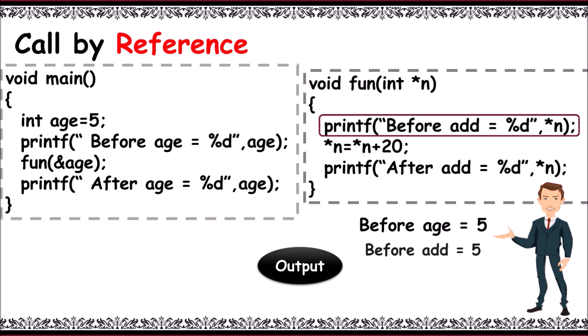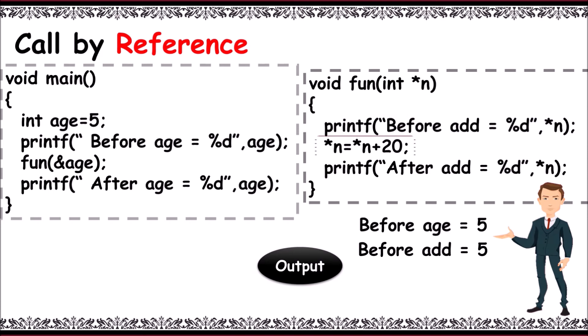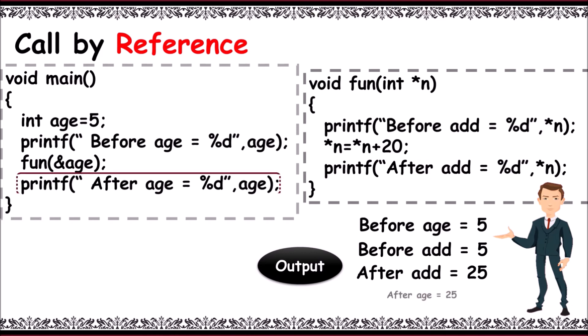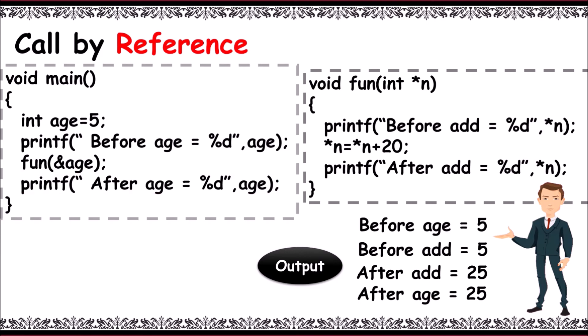It prints 'before add = 5'. Now let's add 20 to the pointer n — asterisk n is 25 now. It prints 'after add = 25', and control goes back and prints 'after age = 25'. In the output, you can observe the value of age gets modified, as we have sent the address of it — this is call by address.